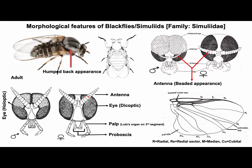Palp of black flies have five segments. They are pendulous and longer than the proboscis. The third segment of the palp carries a sensory pit called the Lutz organ. This organ has many chemosensilla that detect odors such as carbon dioxide. The mouthparts, particularly the mandible and maxilla of male black flies and also a few species of female flies, are feeble and untoothed; therefore, they can't cut or penetrate the host's skin.